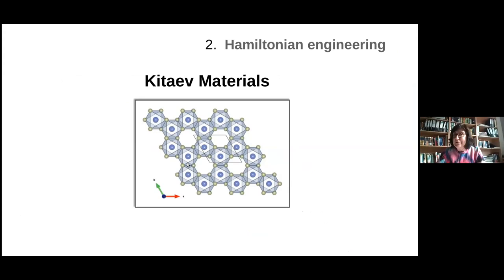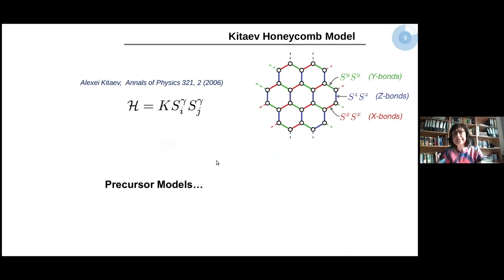Now I want to go to Hamiltonian engineering and to the Kitaev materials. The field of Kitaev materials started with this model — what we now know as the Kitaev model. Before describing this model, let me go to precursor models, since there are many scientists who have been working with these types of models before the Kitaev model was suggested.